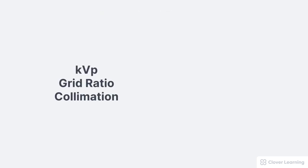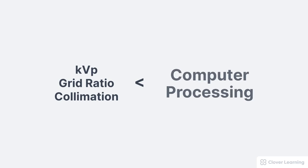Before we discuss this any further, you should know that these procedural factors only have a small influence on image contrast. Why is that? Because computer processing algorithms are very good at creating image contrast regardless of the operator's selection. In digital radiography, computer processing is the most important factor determining image contrast.